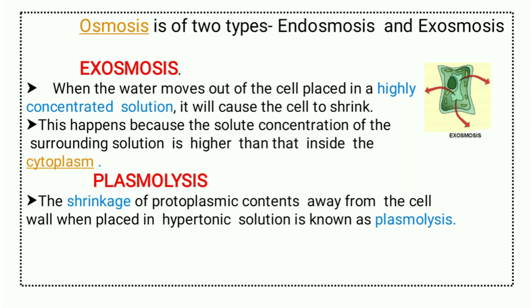What is plasmolysis? Plasmolysis is a shrinkage of protoplasmic contents away from the cell wall when placed in a hypertonic solution. Whenever we place any cell in a hypertonic solution, its protoplasmic content shrinks away from the cell wall, and because of that the plasma membrane breaks. This process is called plasmolysis.